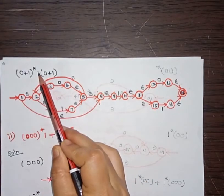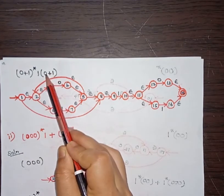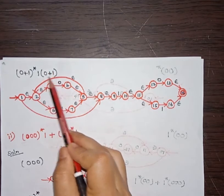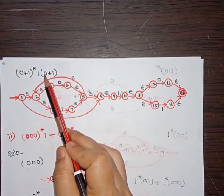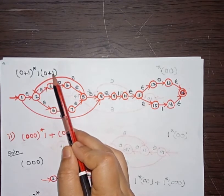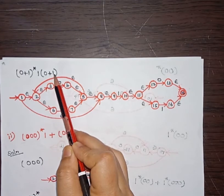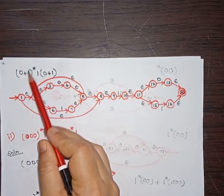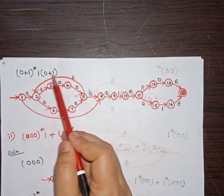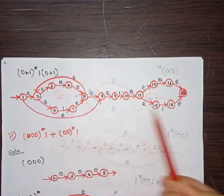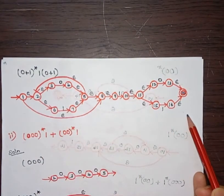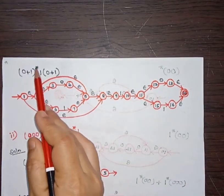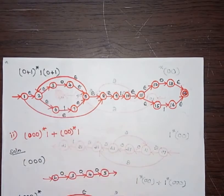Finally, after this we have again concatenation of (0 + 1). We take the previous graph for (0 + 1) and concatenate (0 + 1)* · 1 with (0 + 1). This is the final NFA with epsilon moves derived for the regular expression (0 + 1)* 1 (0 + 1).